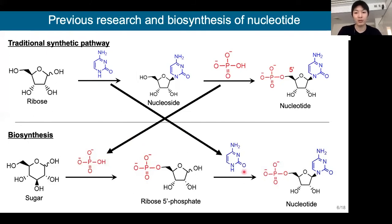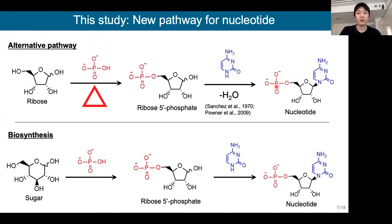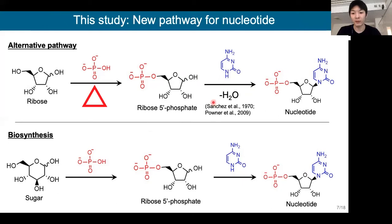In addition, traditional phosphorylation pathways are different from biosynthesis. Current life makes nucleotide via a ribose phosphate intermediate and following nucleobase addition. However, the traditional prebiotic route makes nucleotide from nucleoside formation and its phosphorylation. So we thought that ribose phosphorylation before nucleoside formation is more reasonable for nucleotide formation. This bio-analogous pathway has partially succeeded. Previous research reported nucleotide formation from sugar phosphate using small reactive molecules and UV light. However, no one reported the ribose 5' phosphate formation in a prebiotically plausible condition, so this alternative pathway has not been well supported.